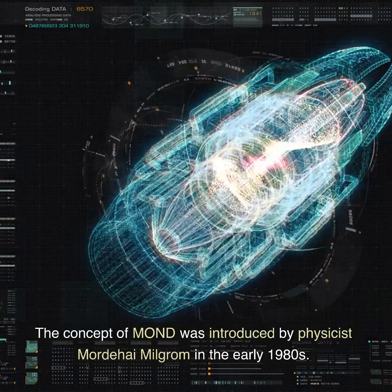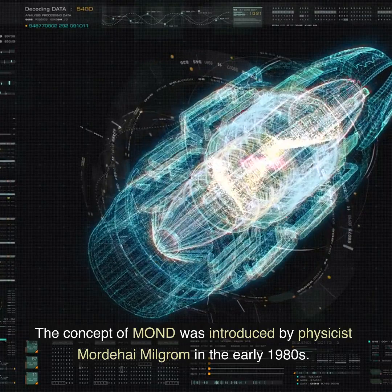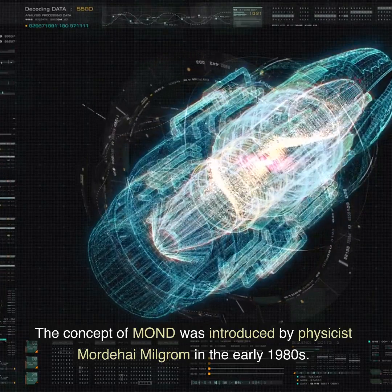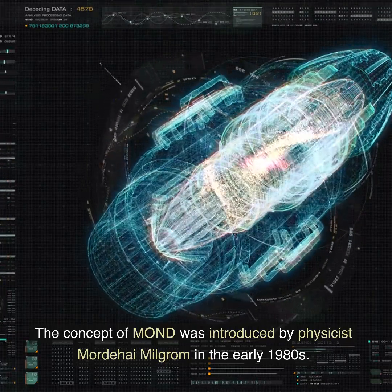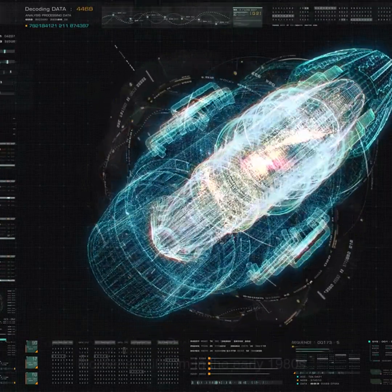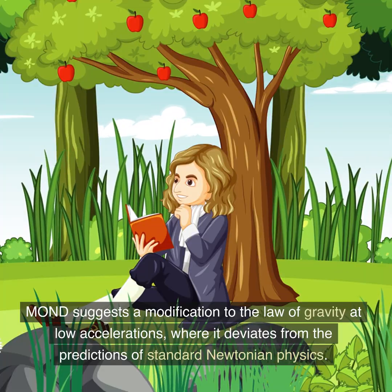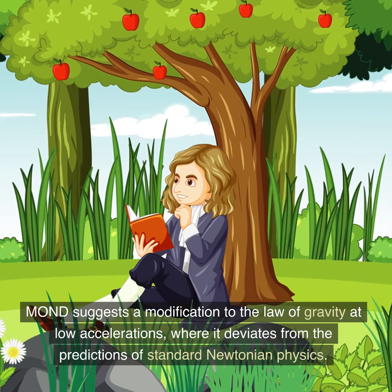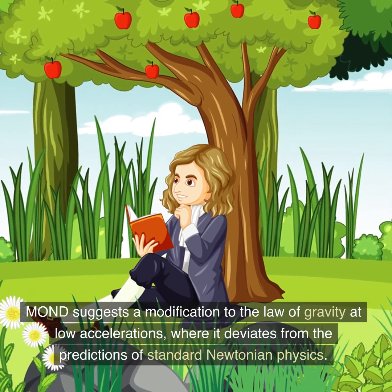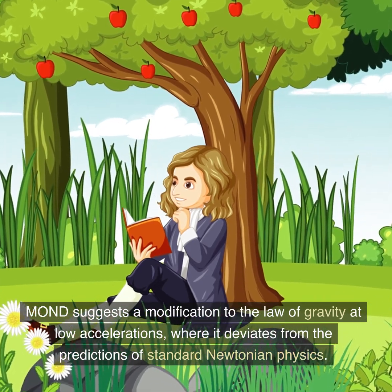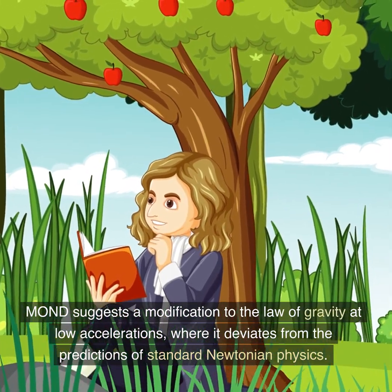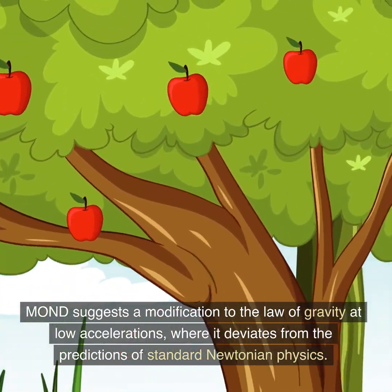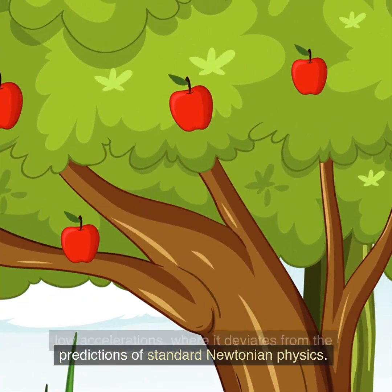The concept of MOND was introduced by physicist Mordecai Milgrom in the early 1980s. MOND suggests a modification to the law of gravity at low accelerations, where it deviates from the predictions of standard Newtonian physics.